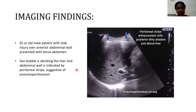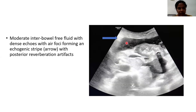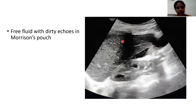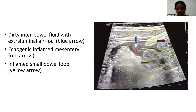Imaging findings: the most commonly found findings were the peritoneal stripe enhancement with posterior dirty acoustic shadowing just above the liver. Most patients also had moderate interval free fluid with dense echoes, air forming, and an echogenic stripe showing posterior reverberation artifact. You can see free fluid in Morrison's pouch with dirty echoes, echogenic mesentery, inflamed bowel loop, interval free fluid with dense echoes, and extraluminal air in this case.